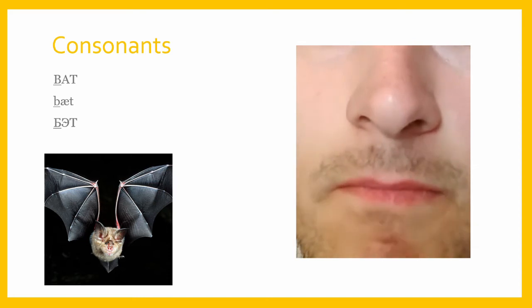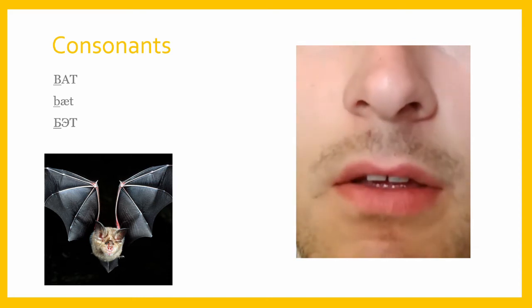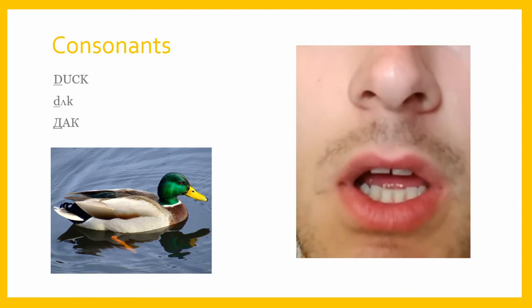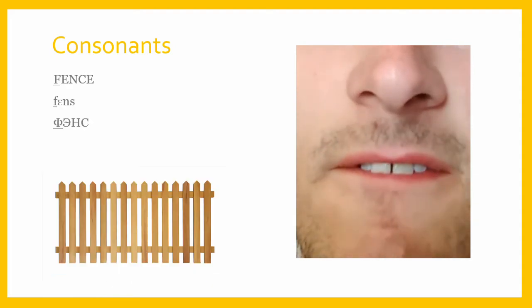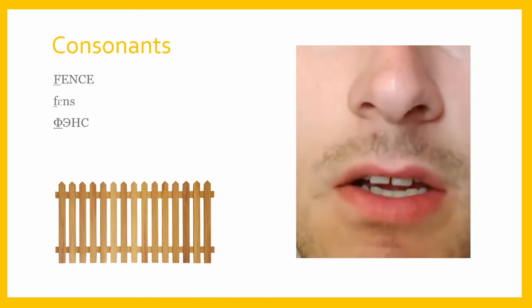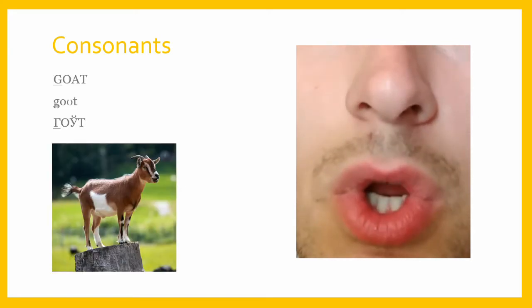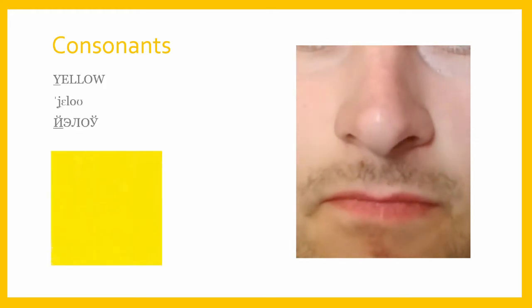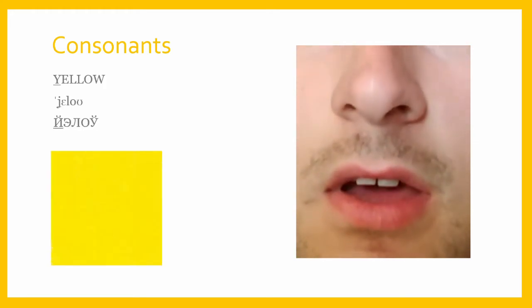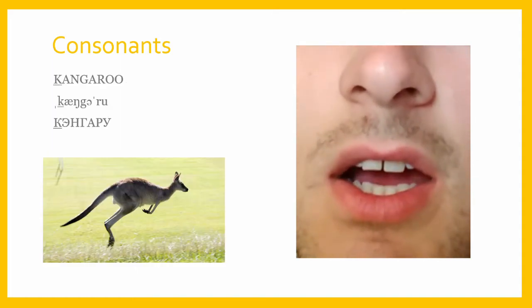Consonants. B — bat. D — duck. F — fence. G — goat. H — hat. Y — yellow. K — kangaroo.